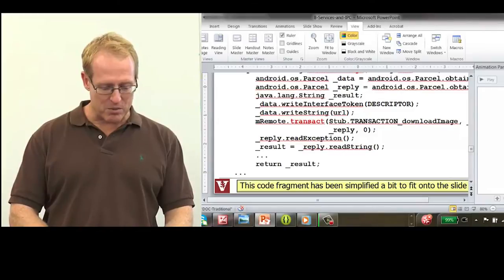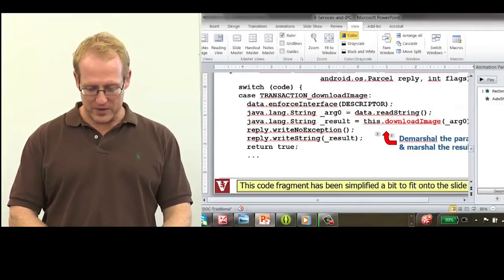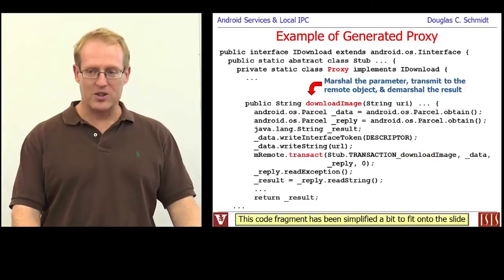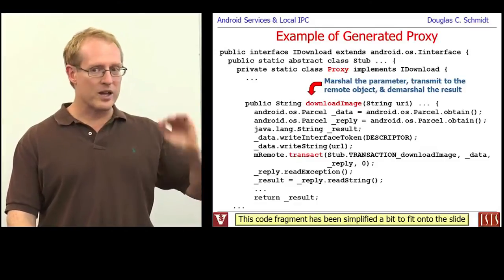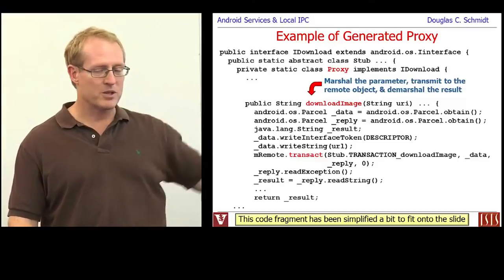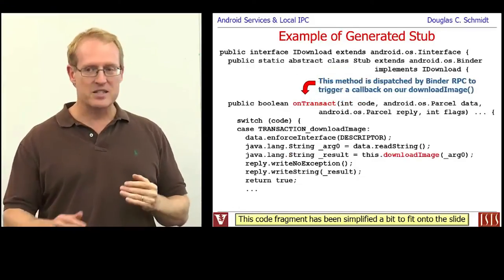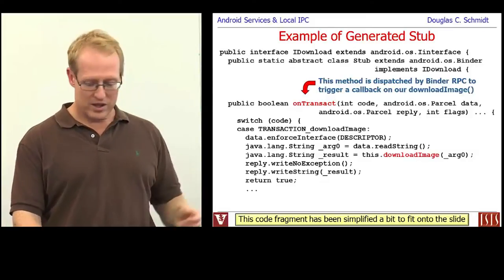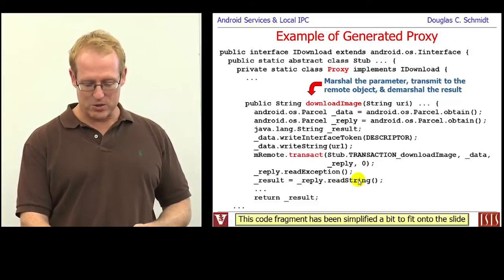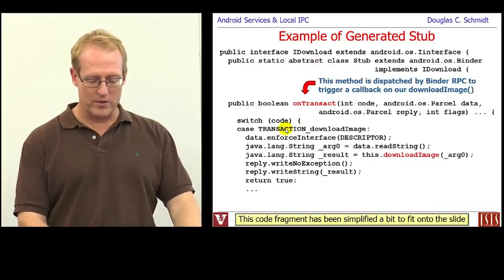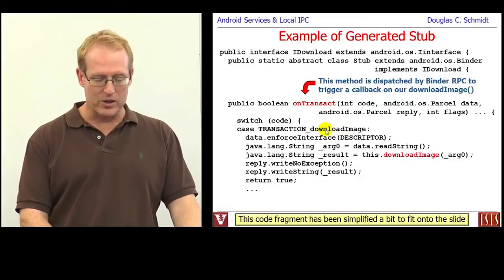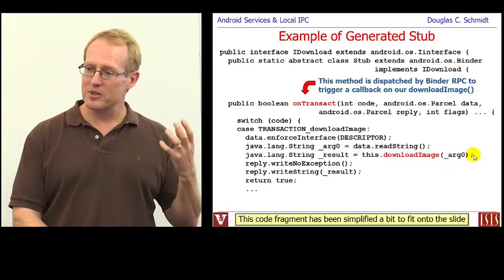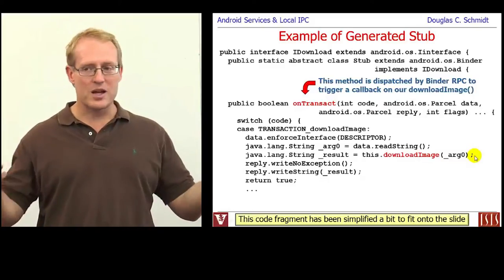I simplified the code just to make sure you'd be able to follow along without it getting too complicated. Here is the method called in response to the call to transact. When the client calls downloadImage, that calls mRemote — the remote binder object or proxy to it — transact. That ends up calling back in the stub the onTransact method. The onTransact method looks at the code — in this case, TRANSACTION_downloadImage — and if it matches, it reads the data string and invokes an upcall on the actual implementation method defined by the user who subclassed the stub.